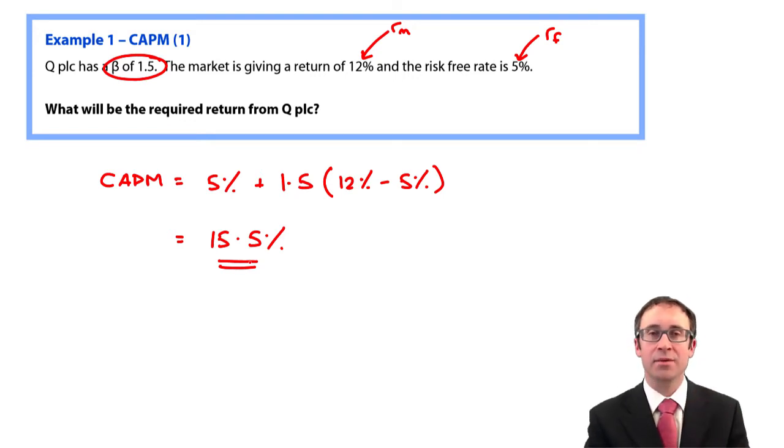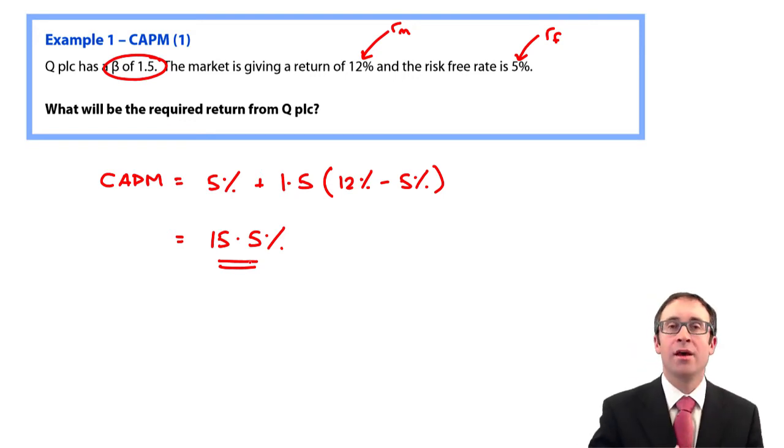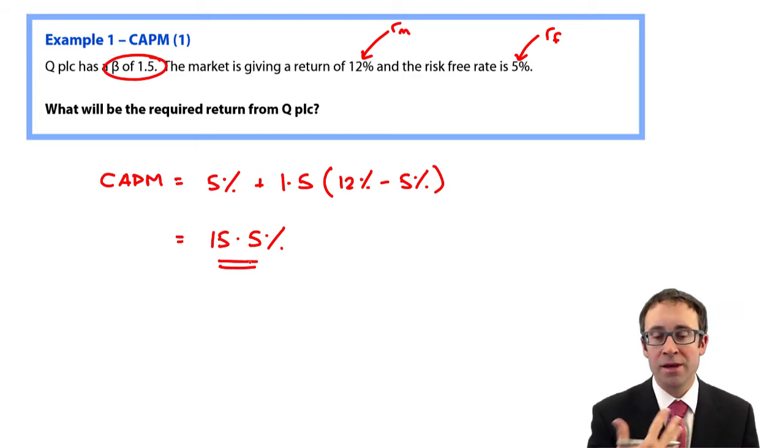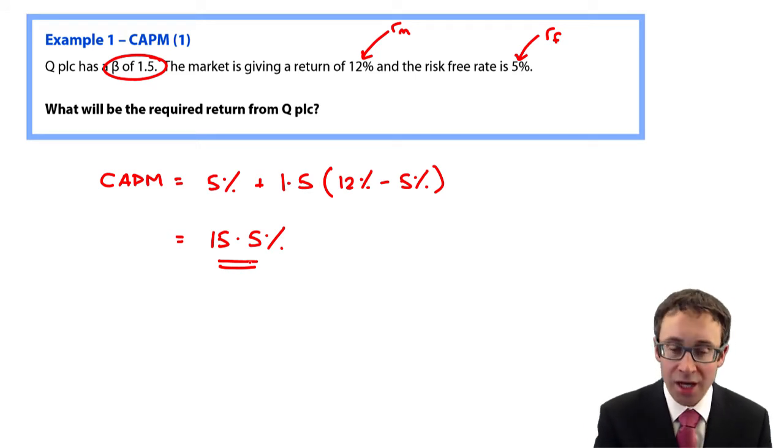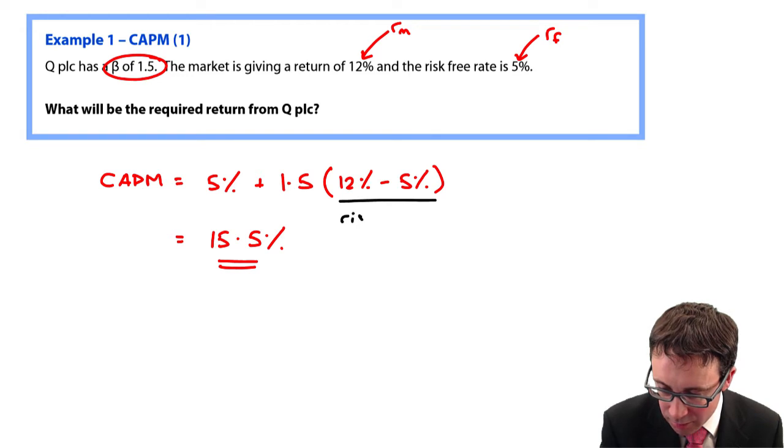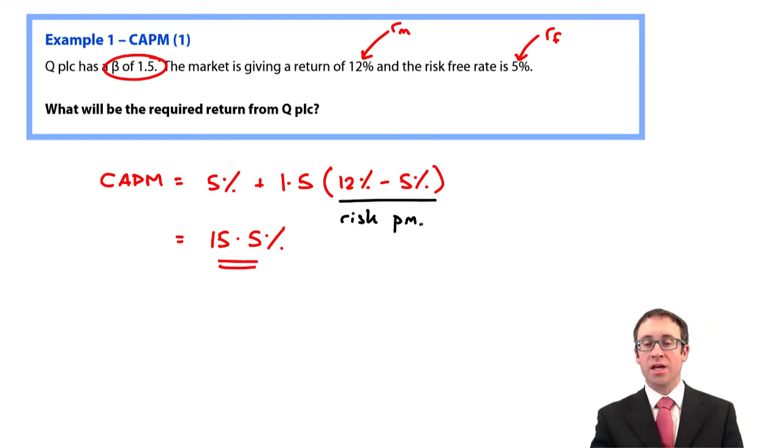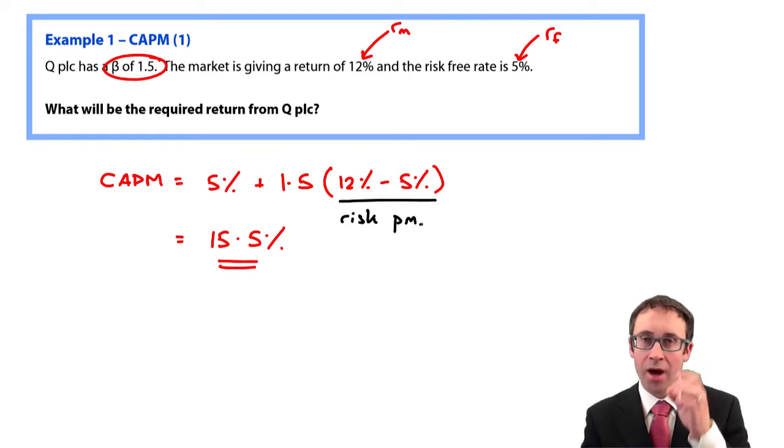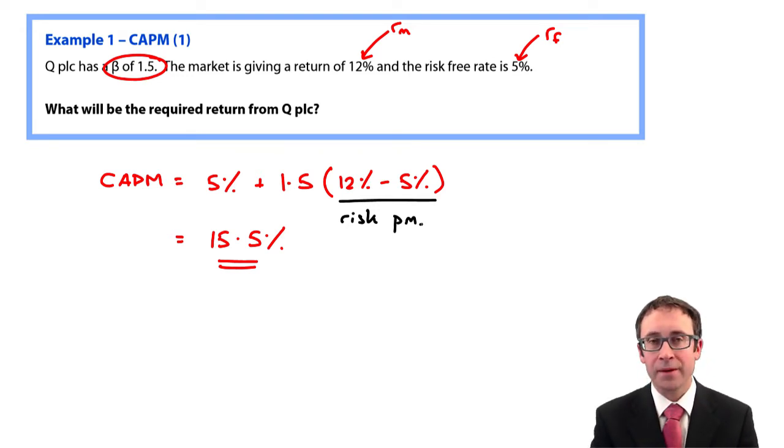So if I were to invest within that investment, I would expect 15.5% because it's an aggressive investment because beta is greater than 1, and therefore I'm getting 1.5 times that risk premium. Not 1.5 times the market return, 1.5 times the premium for investing on the market.